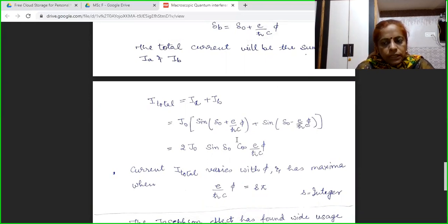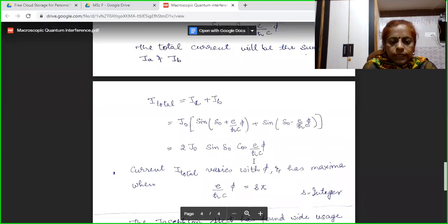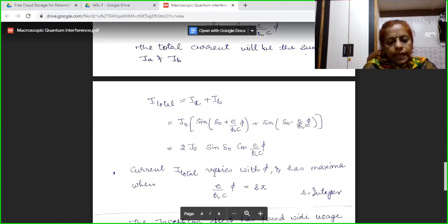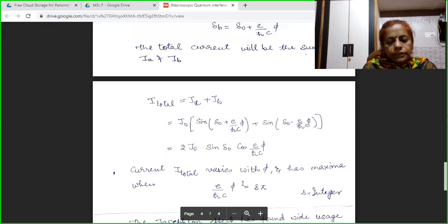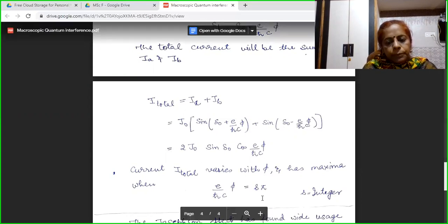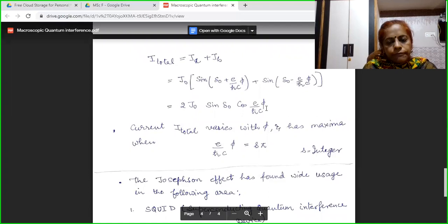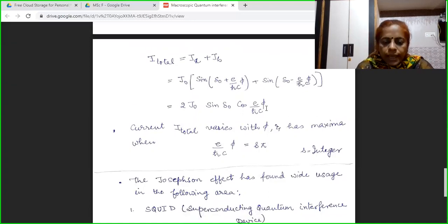Since in this total current, the initial phase is constant, the variable is E phi upon h cross C. This current will have a maxima when E phi upon h cross C is a multiple of pi, where S is an integer. That means this is a current which depends upon the phase difference and the phase difference occurs through the flux phi. So, this effect is known as macroscopic quantum interference effect.